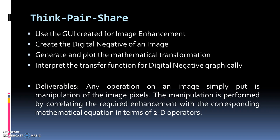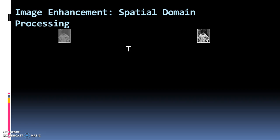The deliverable achieved through this activity was that any operation on an image is simply nothing but the manipulation of its image pixels. The manipulation is performed by correlating the required enhancement function with the corresponding mathematical equation in terms of two dimensions, because as we know, an image is a two-dimensional function. This manipulation of image pixels is called spatial domain processing.